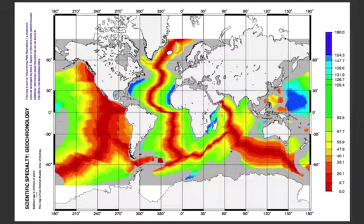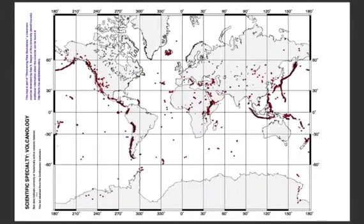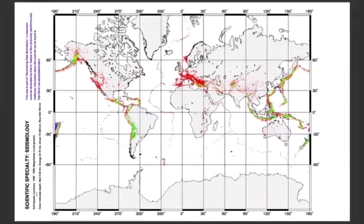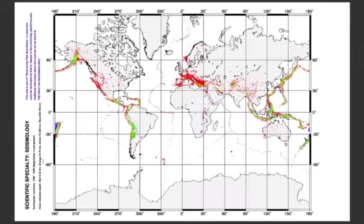You'll answer some questions about geochronology. You might also have some questions about volcanology — you'll use this map, which shows the location of the world's volcanoes. And you'll have some questions about seismology. These maps show the locations of earthquakes; each dot represents an earthquake, and the color tells you the depth. You'll have to figure out what those colors mean using the key.